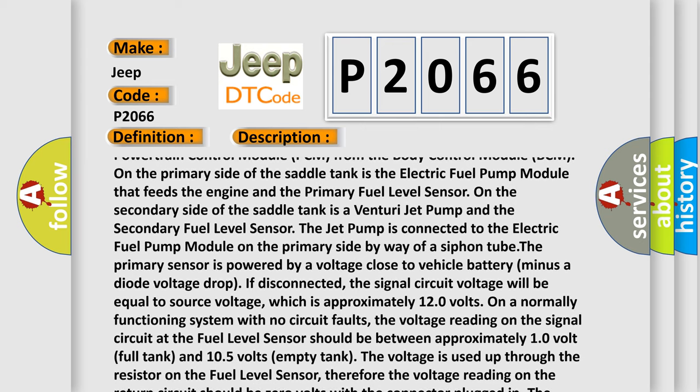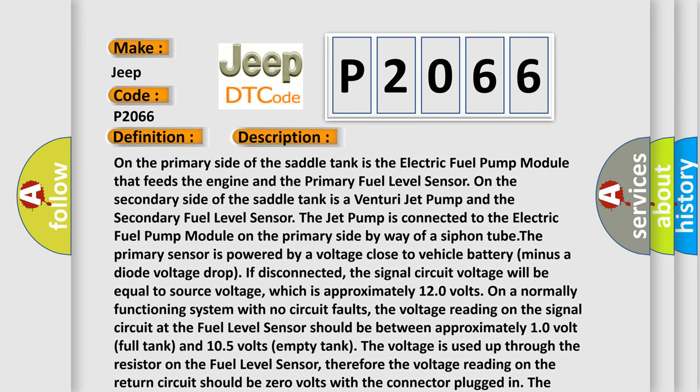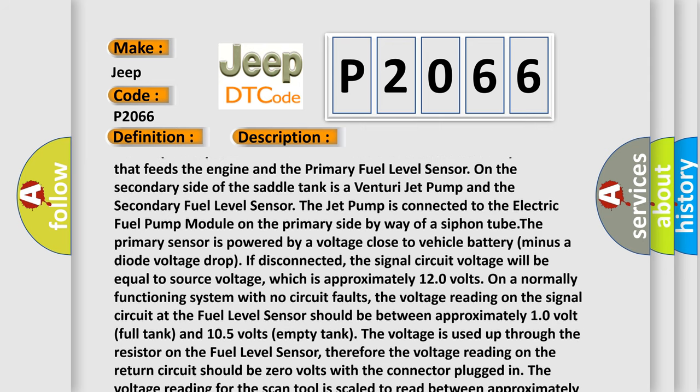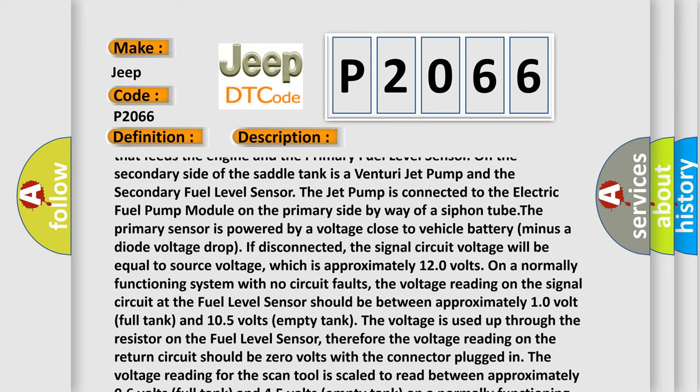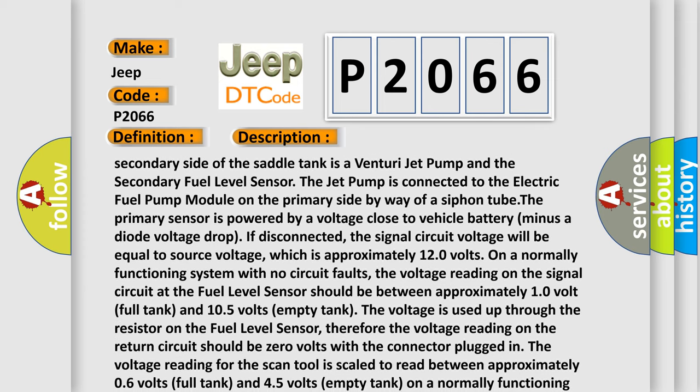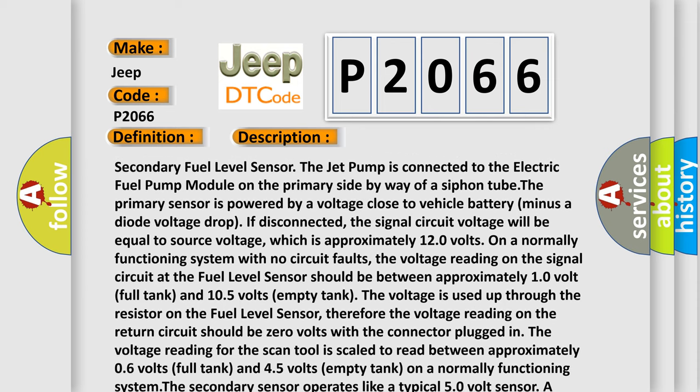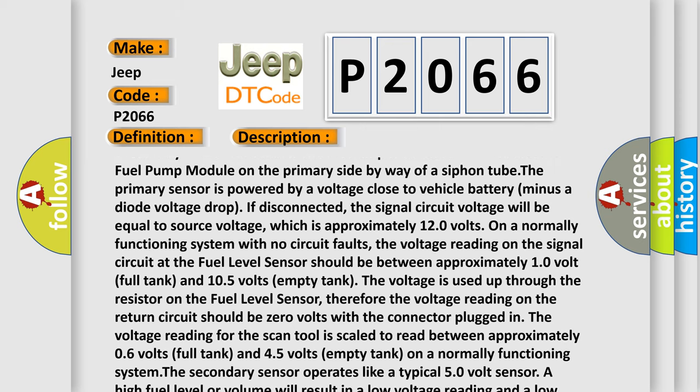The primary sensor is powered by a voltage close to vehicle battery minus a diode voltage drop. If disconnected, the signal circuit voltage will be equal to source voltage, which is approximately 12.0 volts on a normally functioning system with no circuit faults. The voltage reading on the signal circuit at the fuel level sensor should be between approximately 1.0 volt full tank and 10.5 volts empty tank.